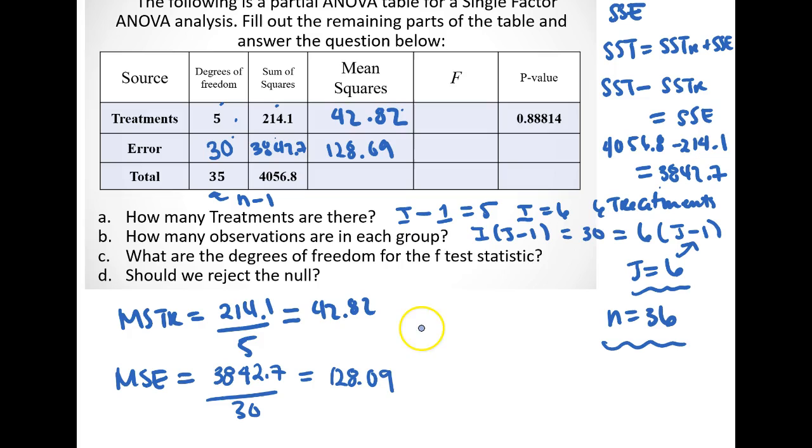And so once we take the ratio for the F test statistic, that is going to be 42.82 divided by the MSE, which is 128.09. We get our F test statistic to be equal to 0.33429, which is a small F test statistic. So any test statistic that's really over maybe like 6, 7, or 8 will probably be significant regardless of the degrees of freedom.